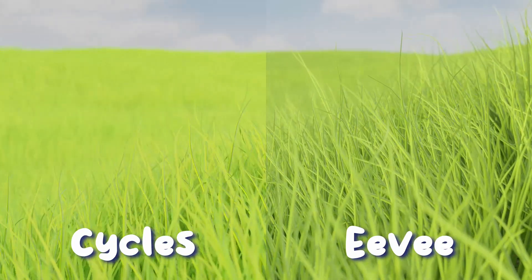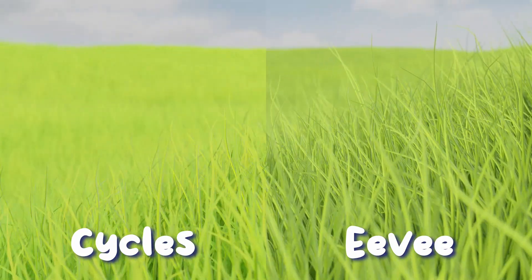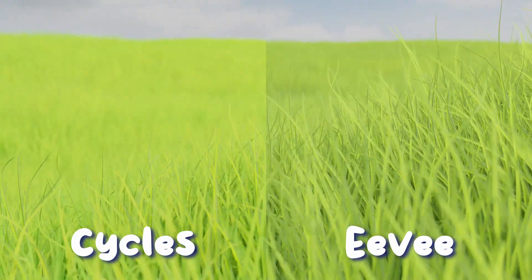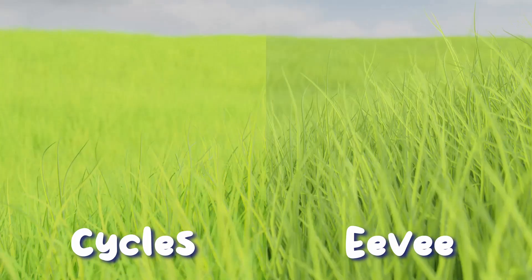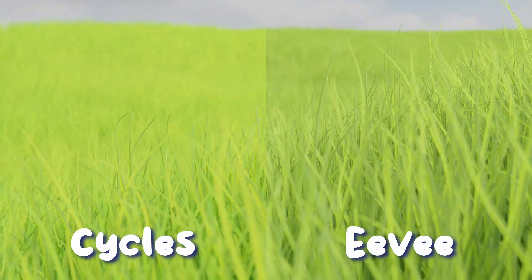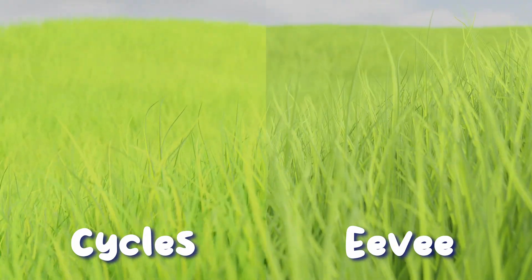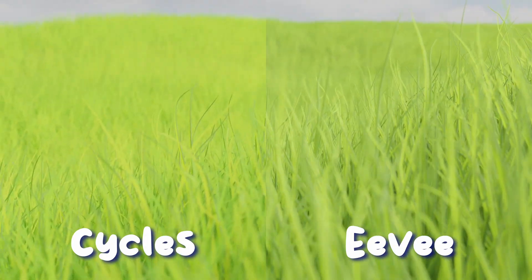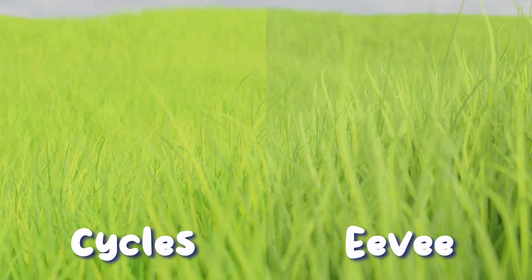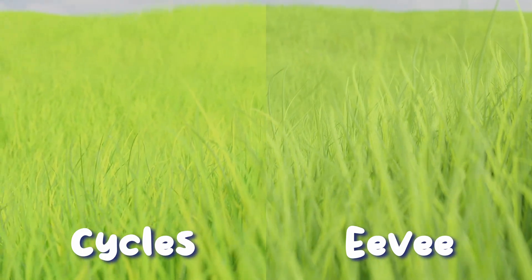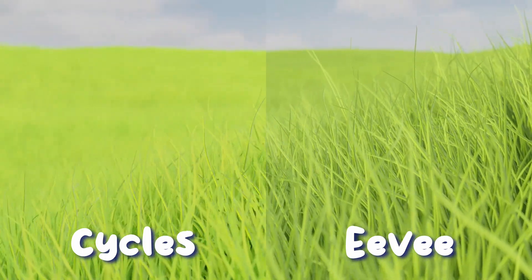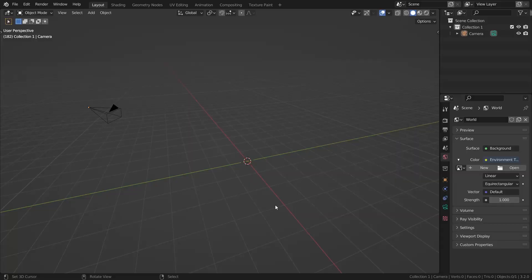We're making grass that looks exactly the same, well almost exactly the same, in both Eevee and Cycles. The benefit is we can render parts of the scene in Eevee and parts in Cycles, and the Cycles parts will have the same reflections they would if the grass had been included in the same view layer. So let's get into it.